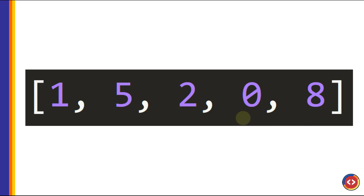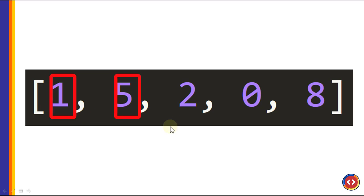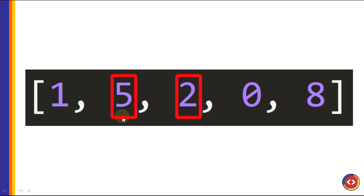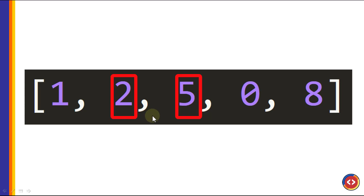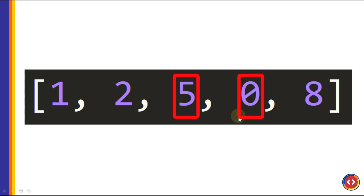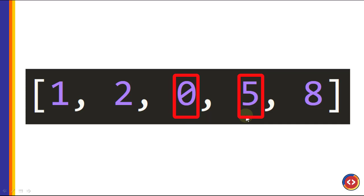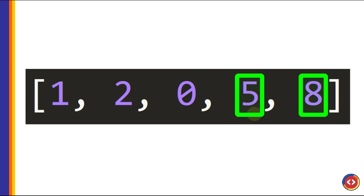We repeat the sequence of walkthroughs through the list once per element. Now we start the process again with the first pair, 1 and 5 — already in the correct order. Then 5 and 2: 5 is not less than 2, so we swap them. Then the third pair, 5 and 0 — we swap them to get 0 and 5. Now 5 is in the correct position. We've sorted two numbers — 5 and 8 — and made two runs through the list.